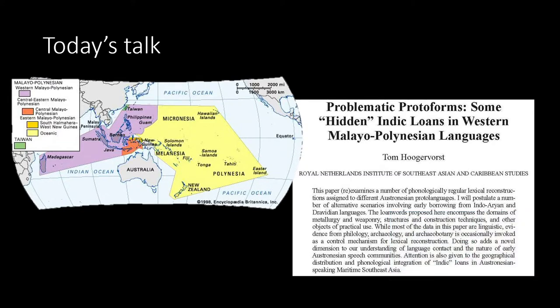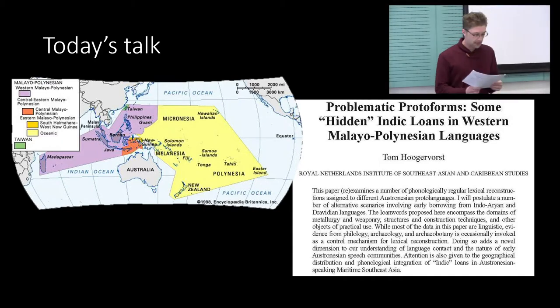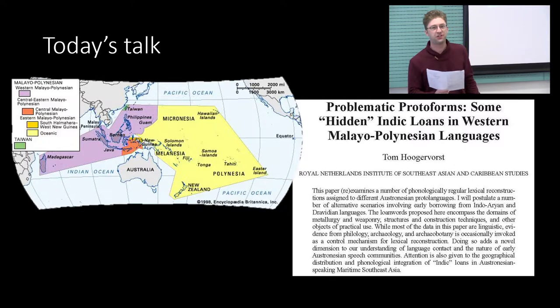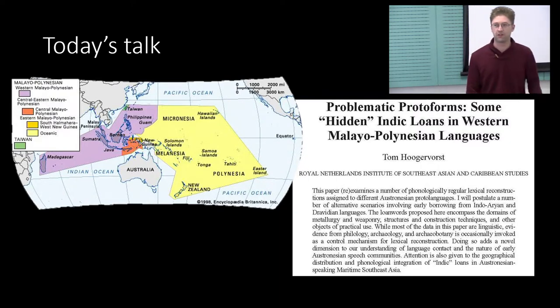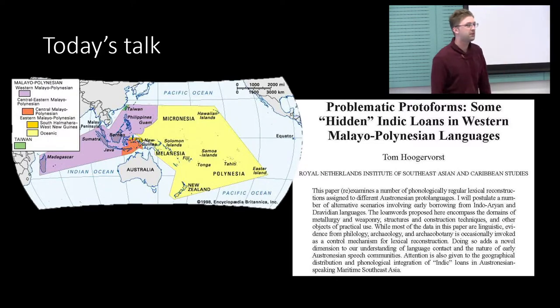So basically today I'd like to raise a couple of methodological points, looking again at the Austronesian language family. And, well, basically it isn't my intention to show how other people were wrong or anything. I think in a lot of cases Austronesian linguists have been the only people right about a certain topic when everybody else was wrong.